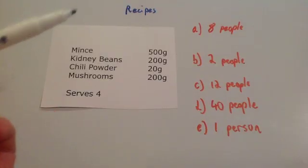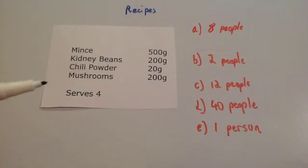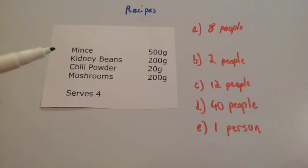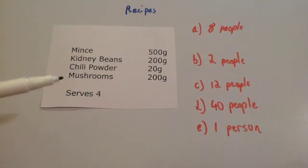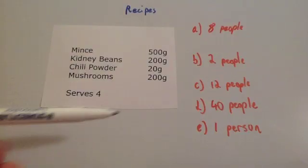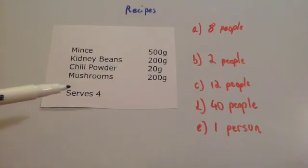Quite often when you look at a recipe, it tells you how many people the recipe serves. So for instance, if you had this recipe here for chili con carne, you've got that it serves four people.